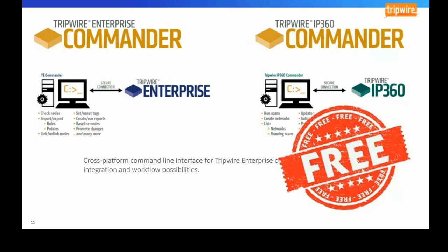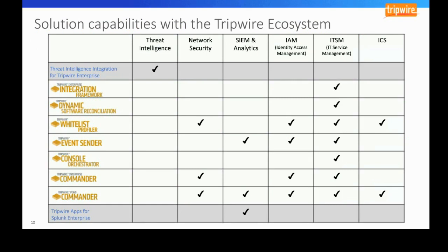By way of summary, I wanted to leave you with a matrix showing the various apps and the different domains of usefulness where they can provide value. This is not a hard and fast rule — we'll provide you whatever tools best suit your needs. This is a snapshot showing where we find the greatest correlation between each app's functionality and the particular vertical or domain for the Tripwire solution use case.